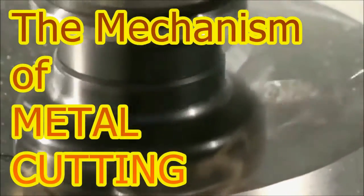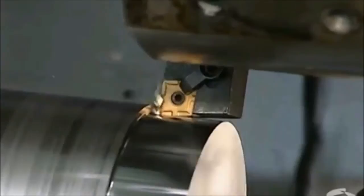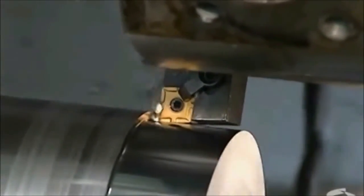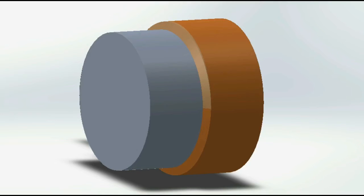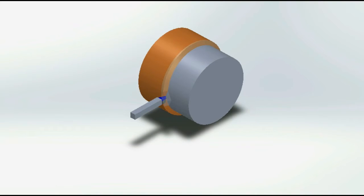This video is about the mechanism of metal cutting. Consider the turning operation - like any metal cutting process, there is a workpiece shown in orange. This is the tool which removes the unwanted material to give the finished surface.